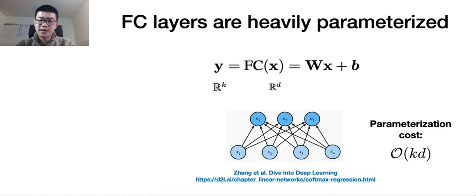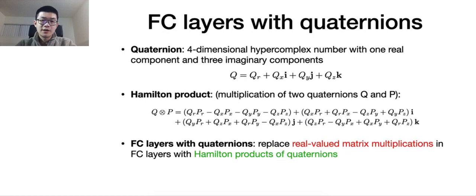So in practice, when the input size or the output size are big, the parameterization cost can be very high for the FC layers. That's why recent works propose fully-connected layers with Quaternions to reduce the parameterization cost.